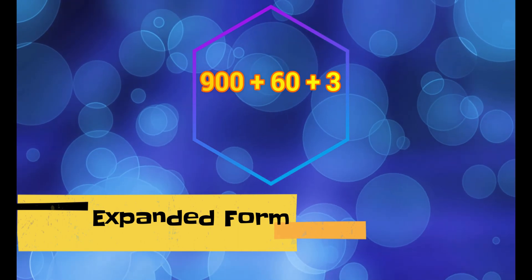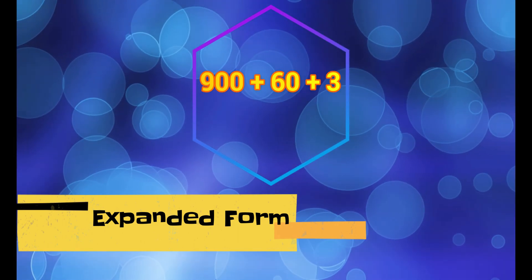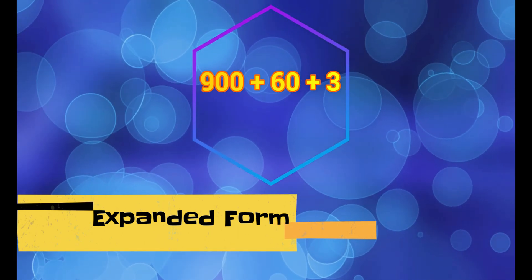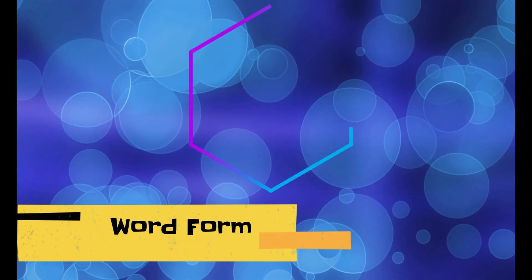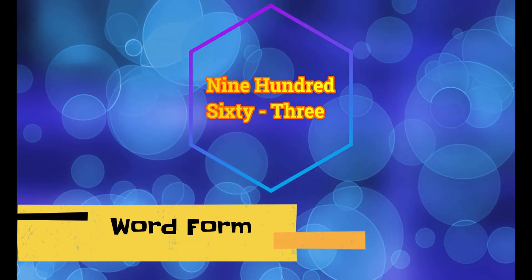We would write it as 900 plus 60 plus 3. If we wanted to write it in word form we would simply just write it using words.